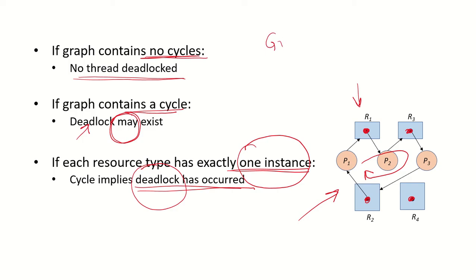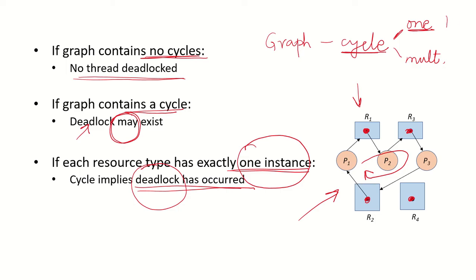But if there are multiple instances of each resource, it is not necessary that a cycle in the graph means there is a deadlock. We have to check whether there is one instance or multiple instances of each resource. If there is one instance and a cycle exists, deadlock is definite; but with multiple instances, a deadlock may or may not have occurred.